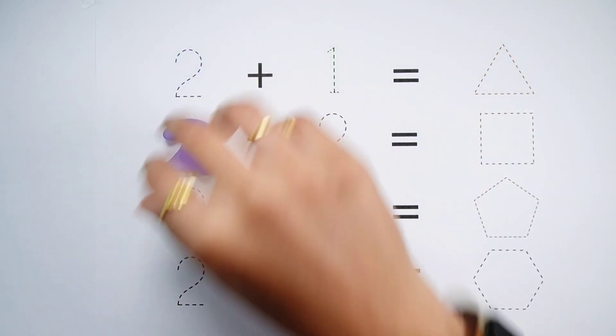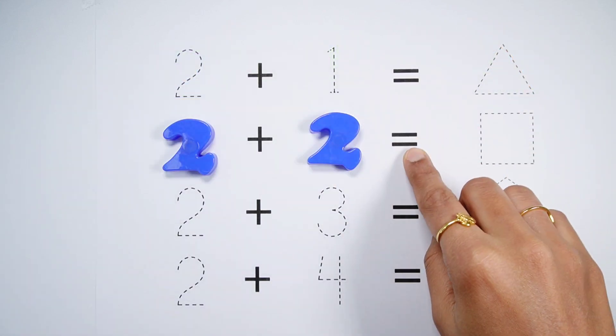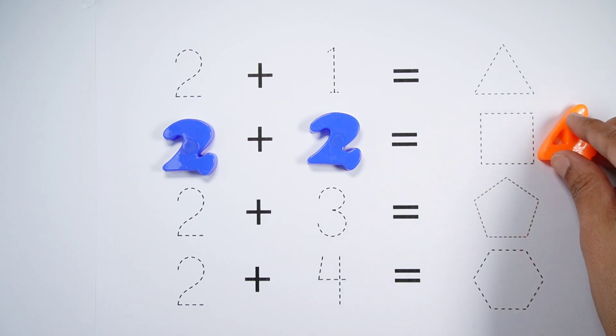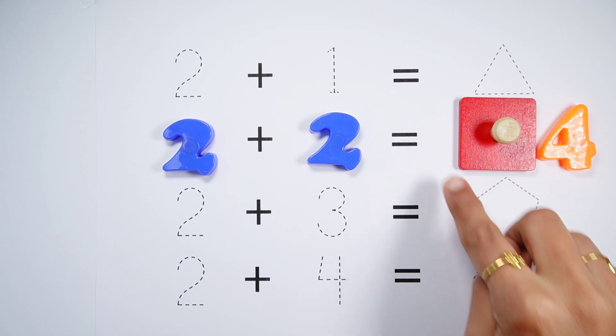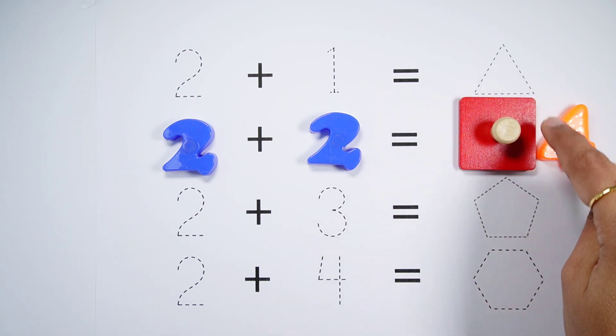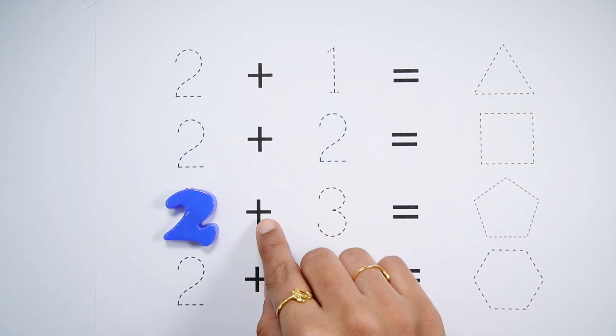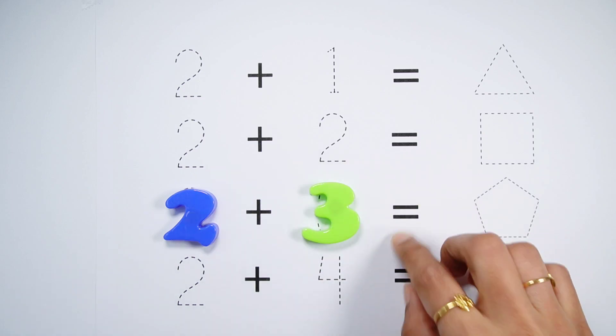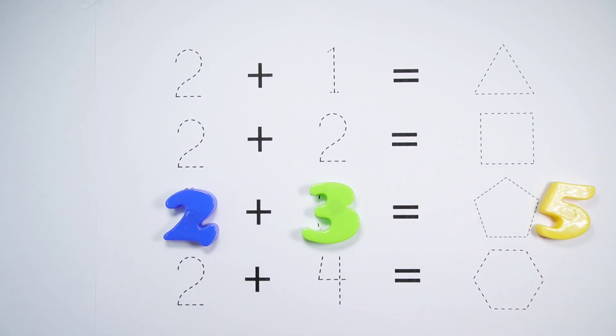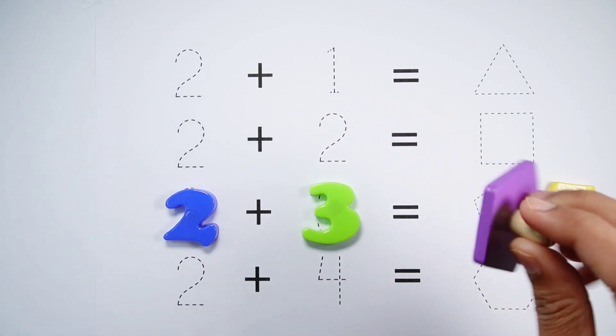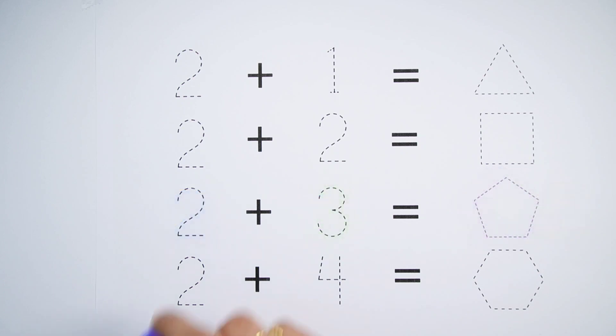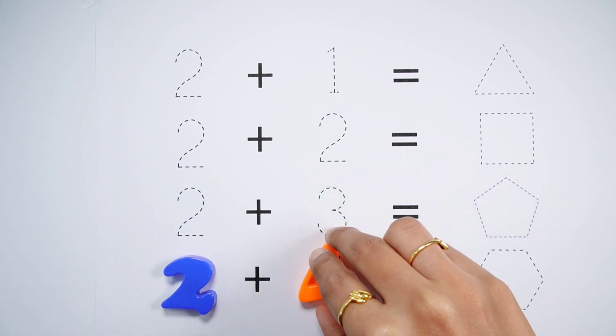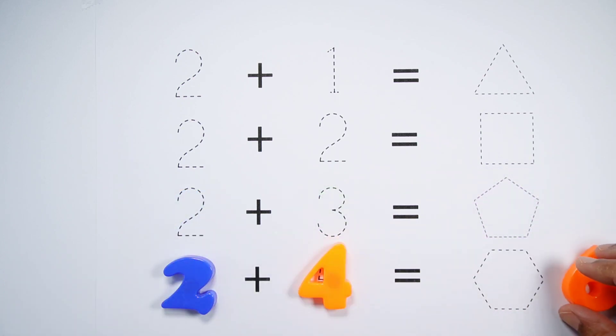2 plus 2 equals 4. A square. A square has four sides: 1, 2, 3, 4. 2 plus 3 equals 5. A pentagon. A pentagon has 5 sides: 1, 2, 3, 4, 5.